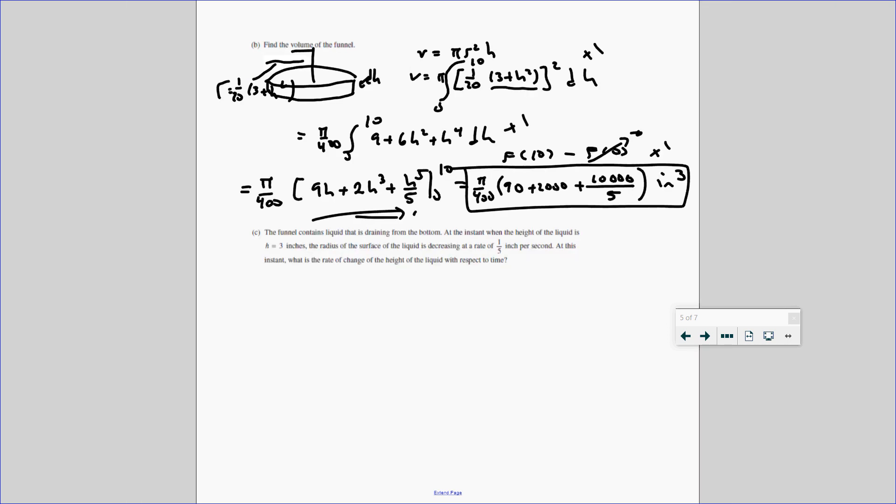All right. So for part C, it says, the funnel contains a liquid draining from the bottom. At the instant the height is 3 inches, the radius of the surface is decreasing at a rate of 0.15 inch per second. This sounds like a related rate. And that's what it is. This is how the AP will throw in a related rate. And you will most likely see one like this on the AP. It's been on almost every test. At this instant, what is the rate of the height? So let's find out what we're given.